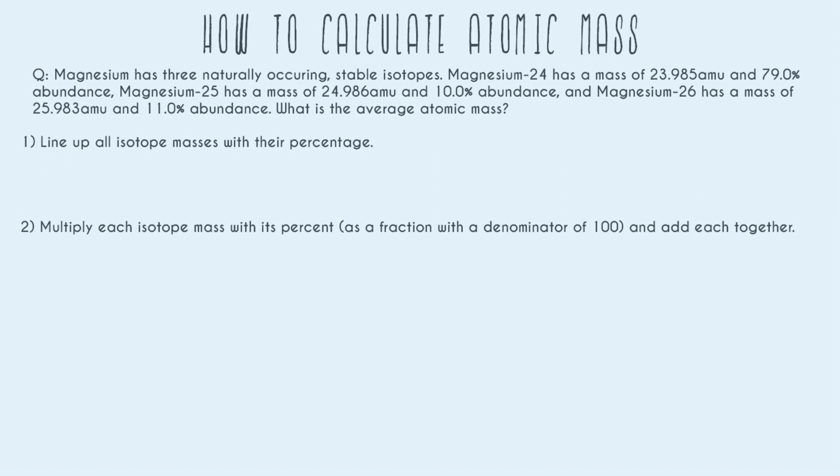Magnesium has three naturally occurring stable isotopes. So I phrased it like this because you're going to see this phrasing in a lot of atomic mass questions. Naturally occurring just means it wasn't made in a lab, and stable just means it's not going to disappear after a couple of seconds. It's not radioactive. So all you have to care about this first sentence is that magnesium has three isotopes that you have to care about. Don't worry about the rest of them. So now moving on.